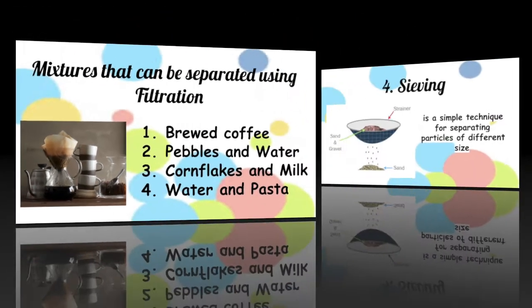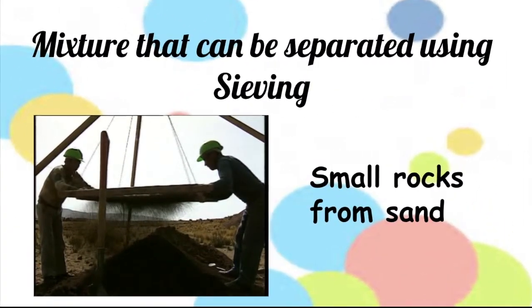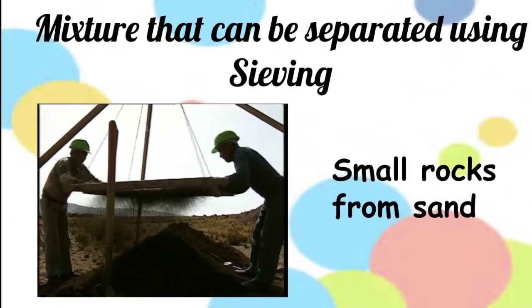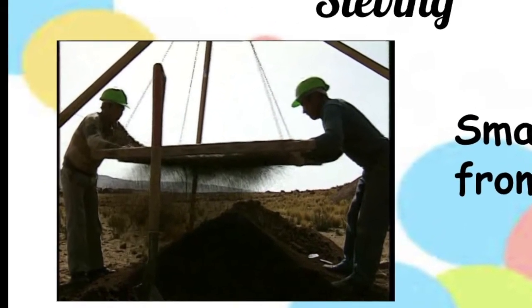Our fourth separation technique is called sieving. It is a simple technique for separating particles of different sizes. Small rocks in the sand is an example of mixture that can be separated by sieving.